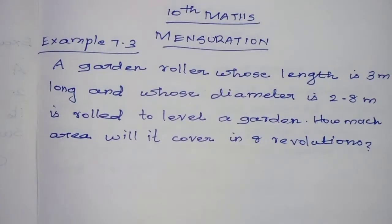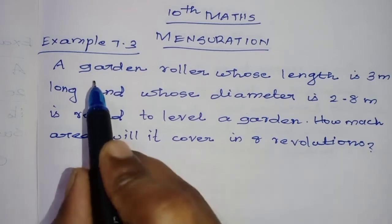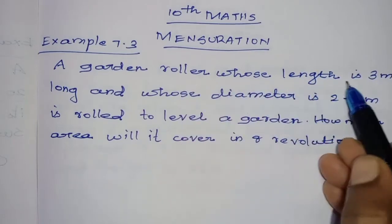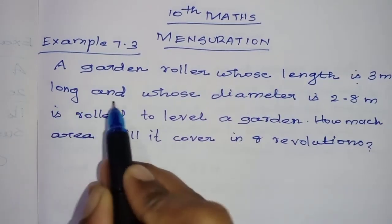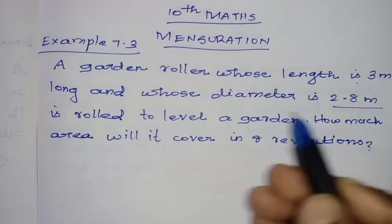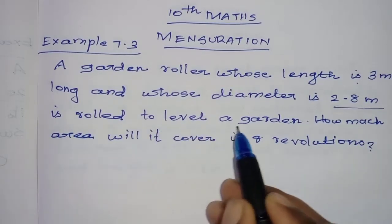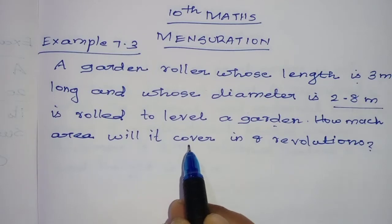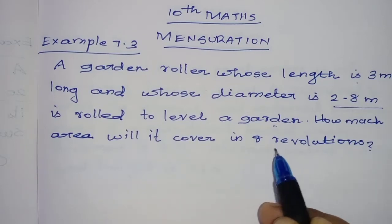Hi students, welcome to Benimarks. Here I am going to teach example 7.3 from 10th Samacheer Maths chapter mensuration. A garden roller whose length is 3 meters long and whose diameter is 2.8 meters is rolled to level a garden. How much area will it cover in 8 revolutions?